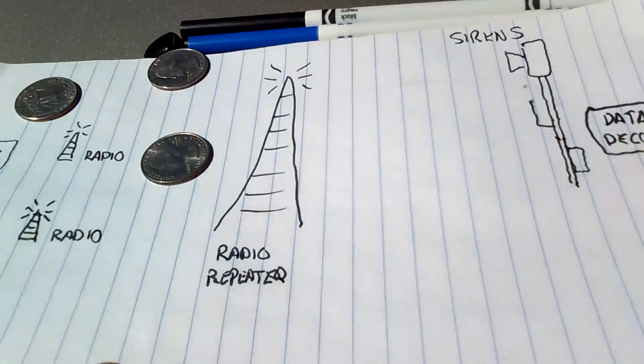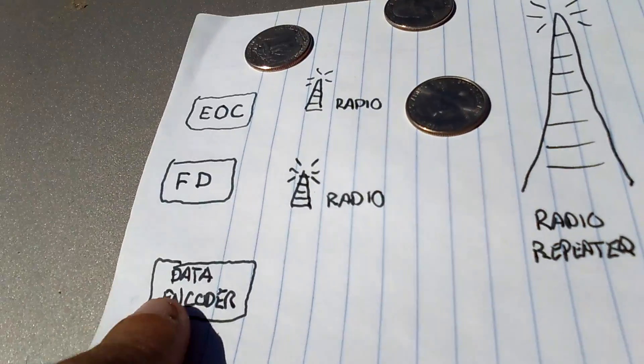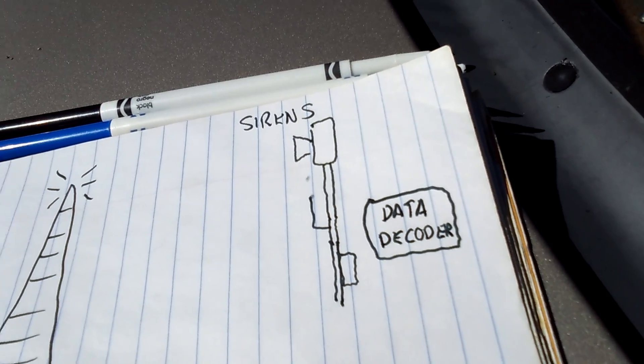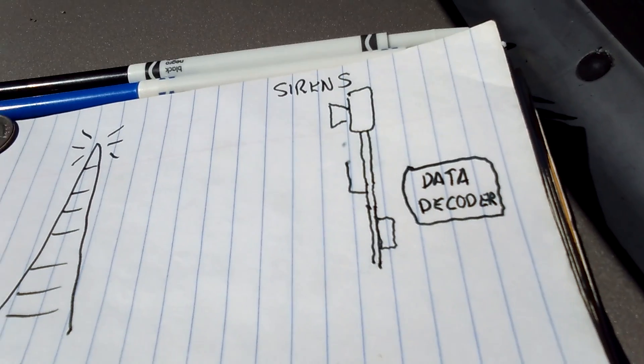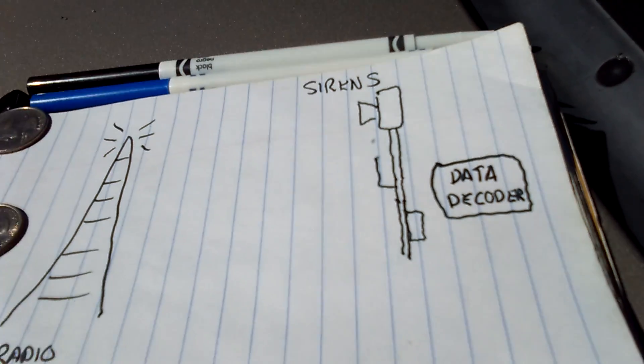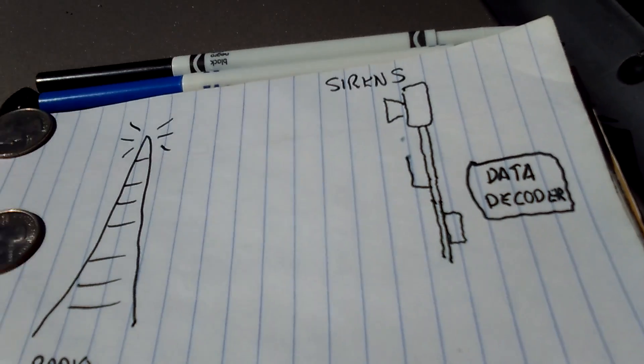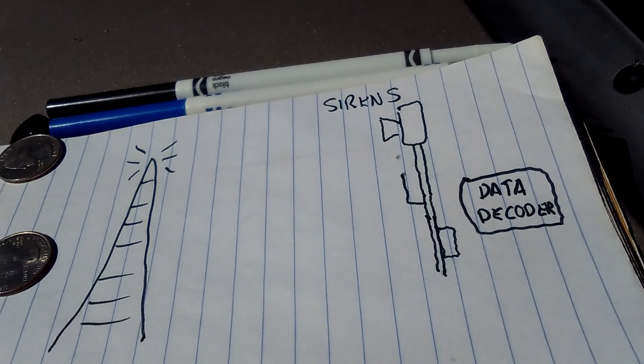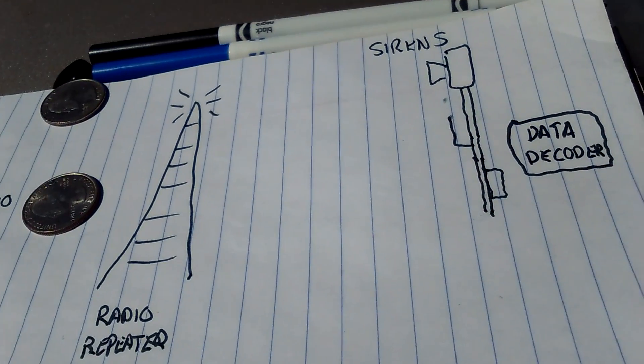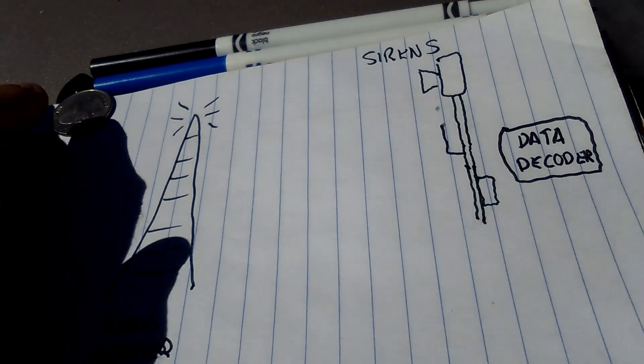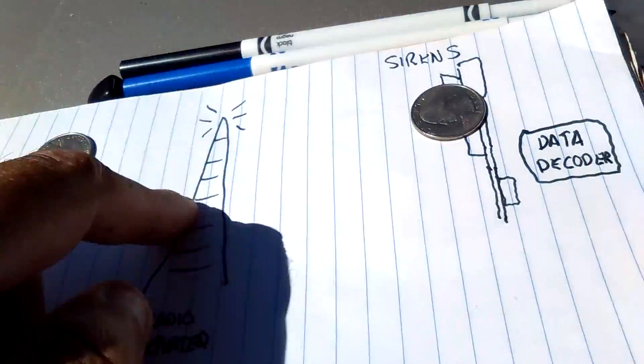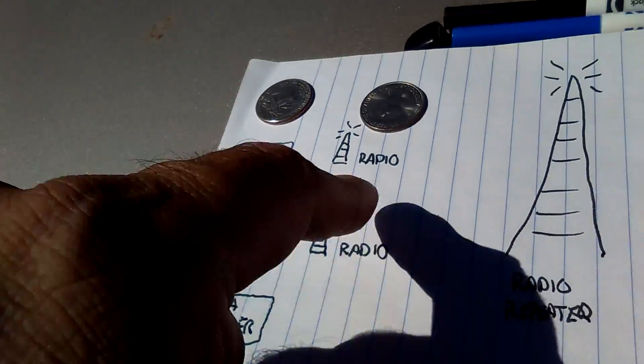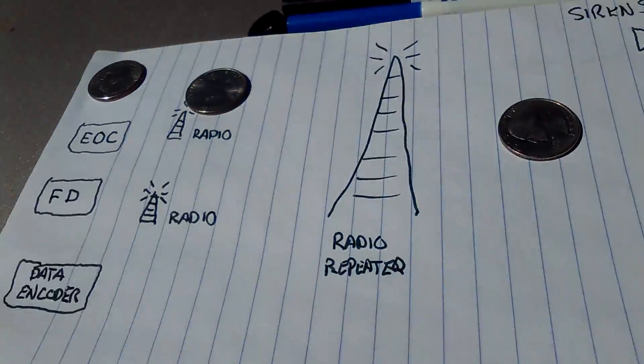Back in the day before the radio links, outdoor warning systems were usually controlled by wireline, i.e. a telephone line leased through the telephone company. But it was expensive, and they were prone to damage. For example, there was a tornado over here, and it tore out the wirelines. Before the EOC or the FD issued the warning through the wireline, the sirens wouldn't go off.